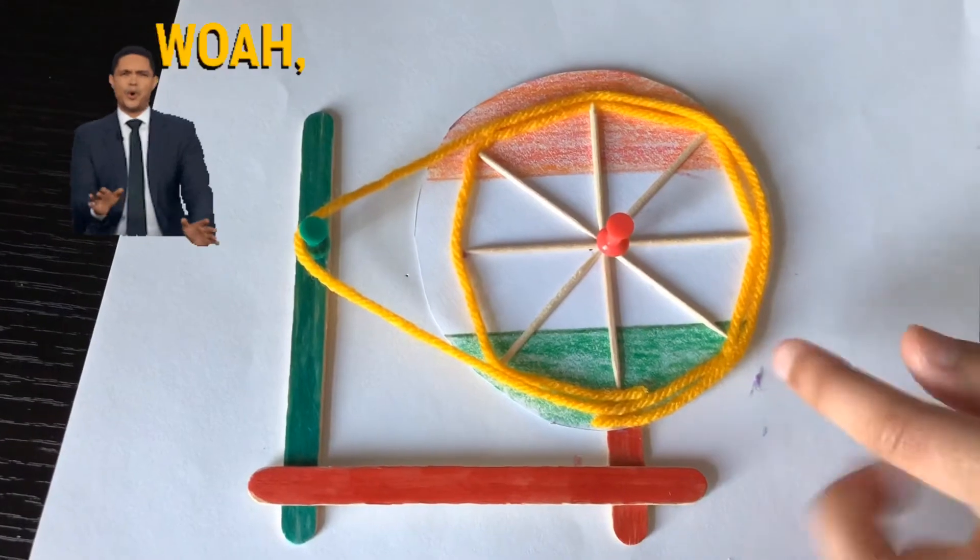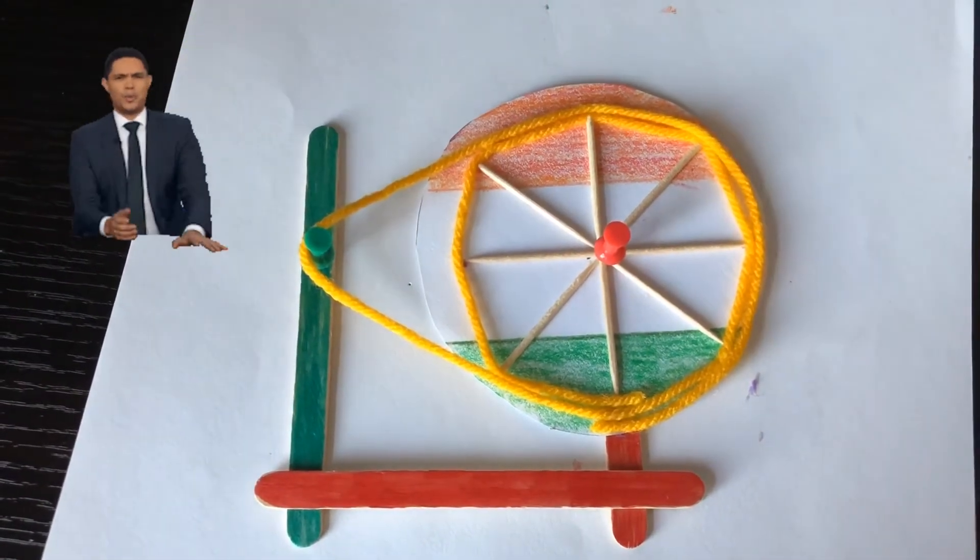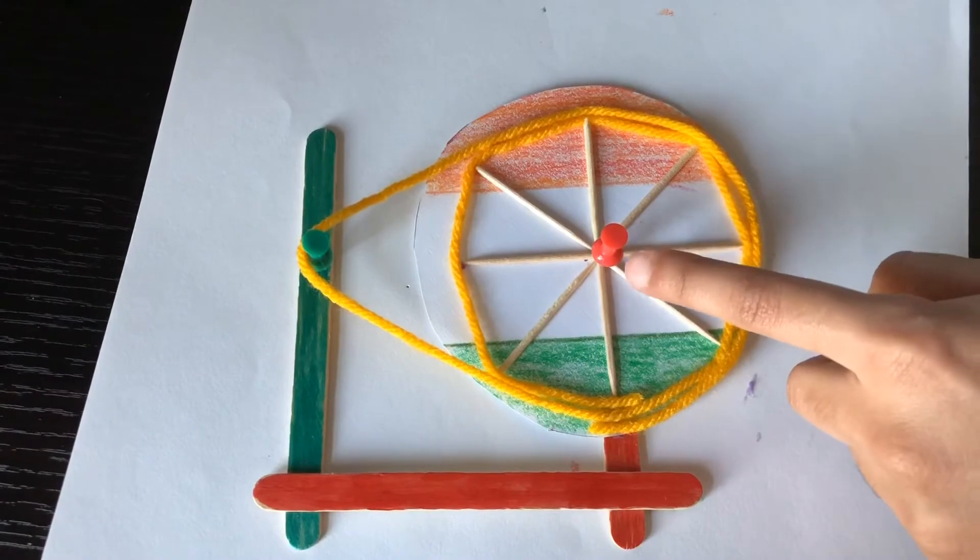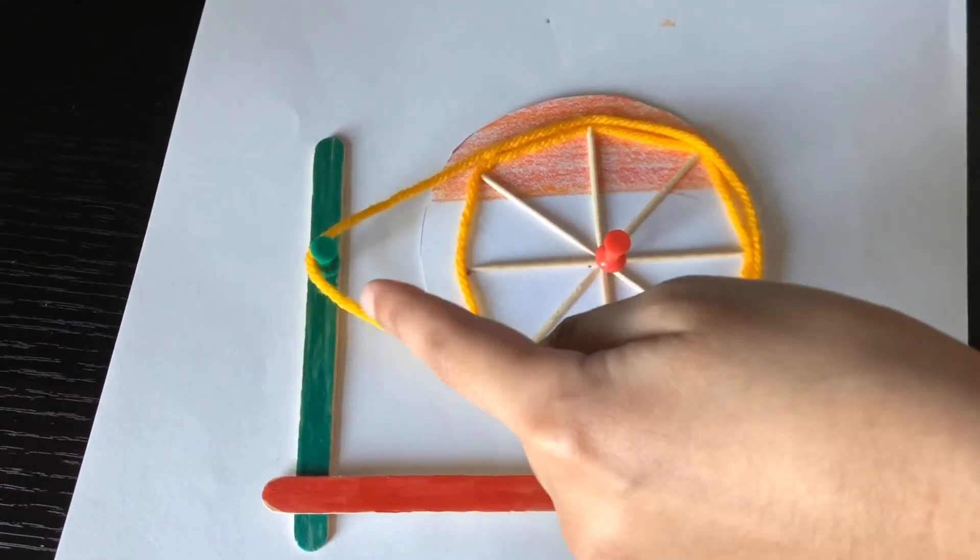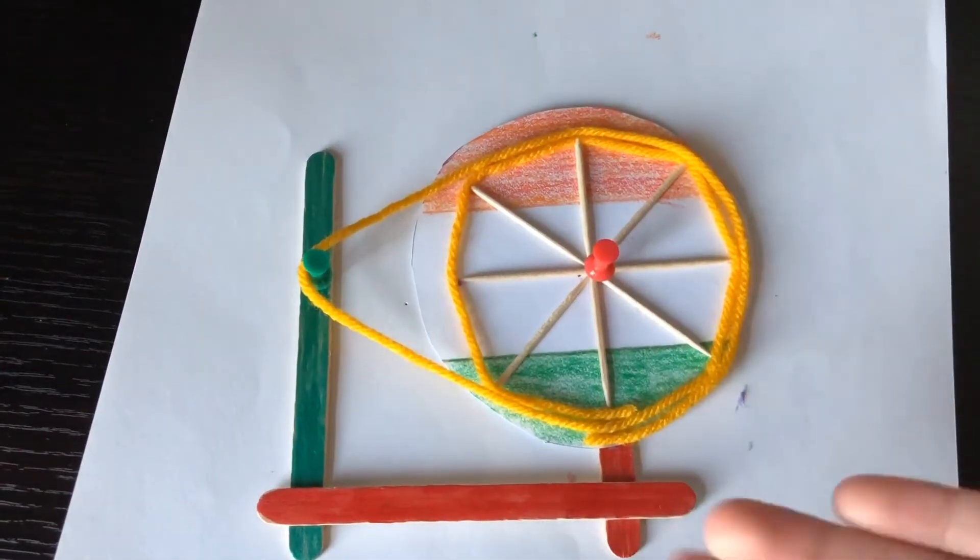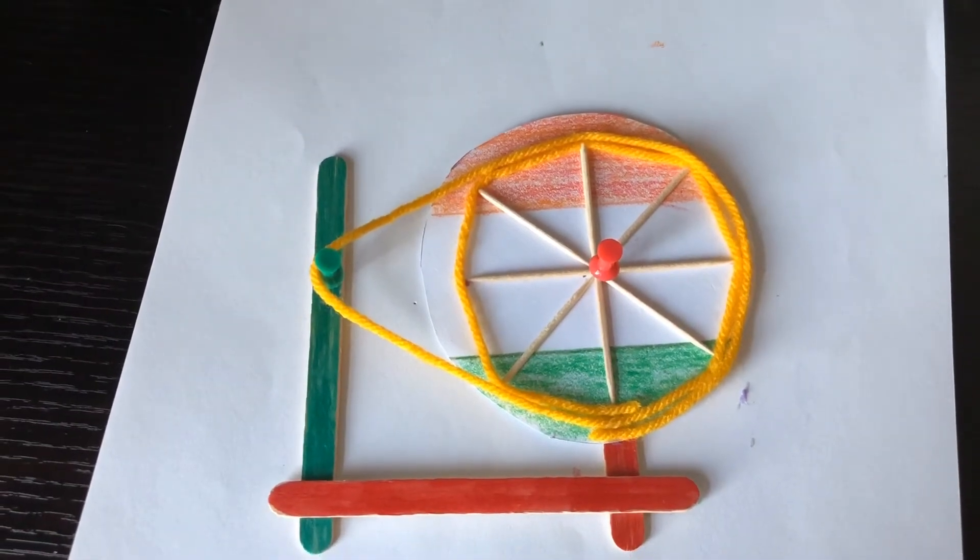Then we need to tie another yarn around the yarn we already tied. Then we put a little pin in at the middle and one pin over there that we got it in. And see this is how it looks like. Isn't it amazing?